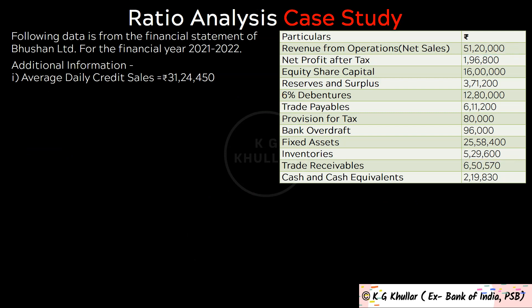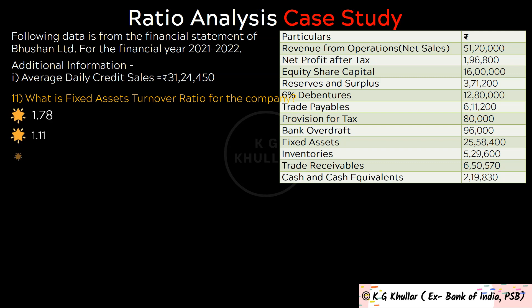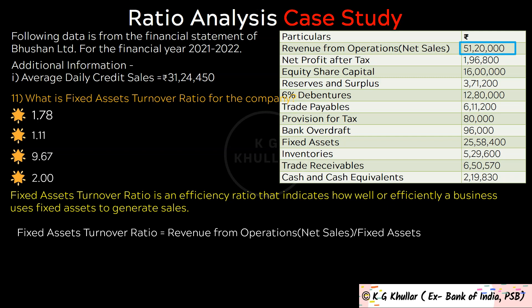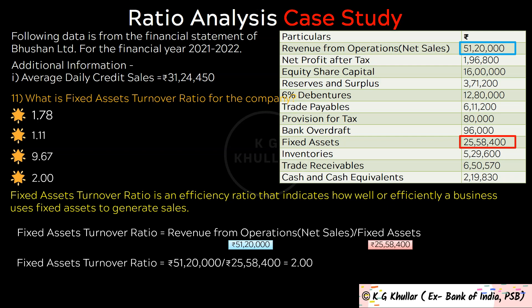The next question is: What is Fixed Asset Turnover Ratio for the company? Fixed Asset Turnover Ratio is an efficiency ratio that indicates how well a business uses fixed assets to generate sales. It is calculated as Revenue from Operations divided by Fixed Assets, that is Rs. 51,20,000 divided by Rs. 25,58,400, which equals approximately 2. The correct option is option D.